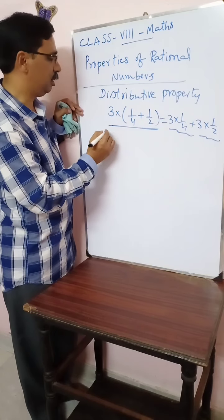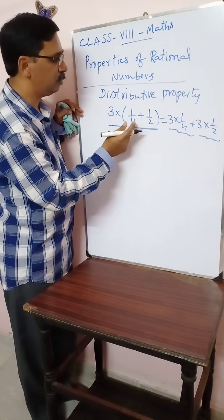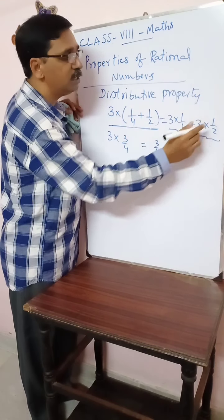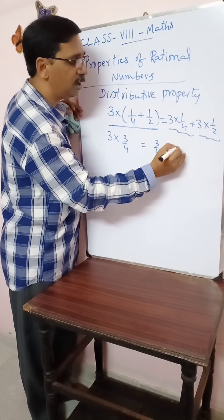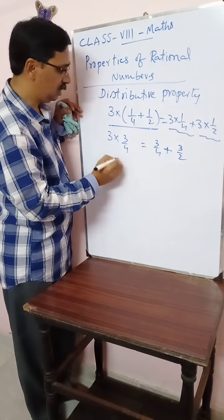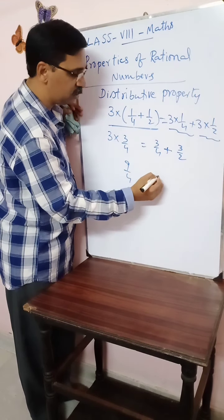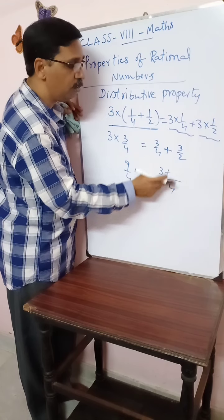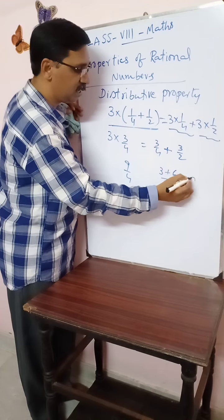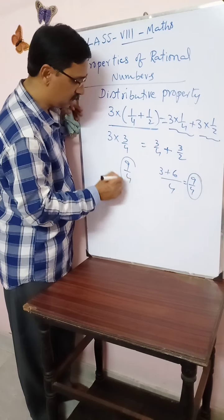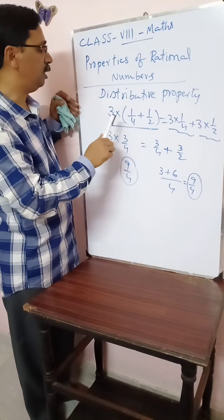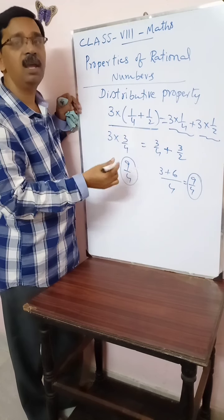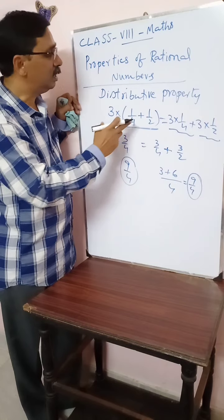The values on the left-hand side and right-hand side of the equals sign will be the same. Let us check: 3 into (1/4 plus 1/2) — the sum inside is 3/4, so the result is 9/4. On the right: 3 into 1/4 is 3/4, and 3 into 1/2 is 3/2. With LCM 4, that gives 3 plus 6 over 4, which is also 9/4. Both sides equal 9/4. This confirms distributivity of multiplication over addition, which also holds for subtraction.